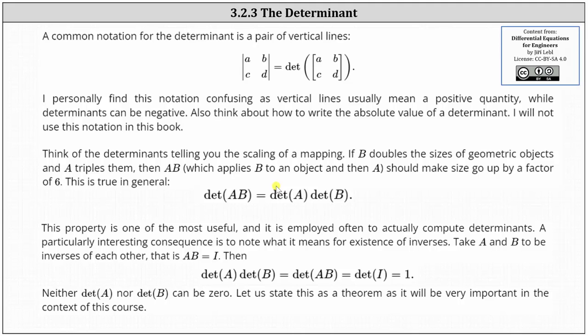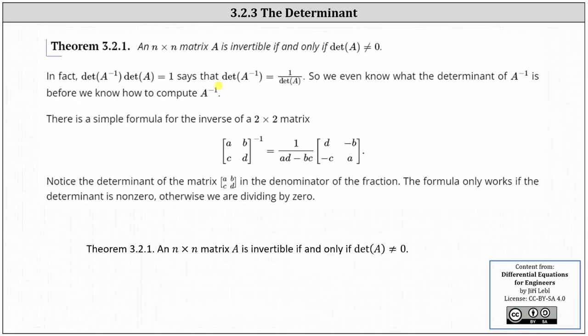This has a consequence for the existence of inverses. If A and B are inverses of each other, then A times B equals the identity matrix I, so the determinant of A times the determinant of B equals the determinant of the identity matrix, which equals one. Therefore neither the determinant of A nor the determinant of B can be zero. As a theorem: an n by n matrix A is invertible if and only if the determinant of A is not equal to zero. Looking at the formula for the inverse of a two by two matrix, the denominator is a times d minus b times c — the determinant — and division by zero is undefined, confirming that a square matrix with determinant zero has no inverse.